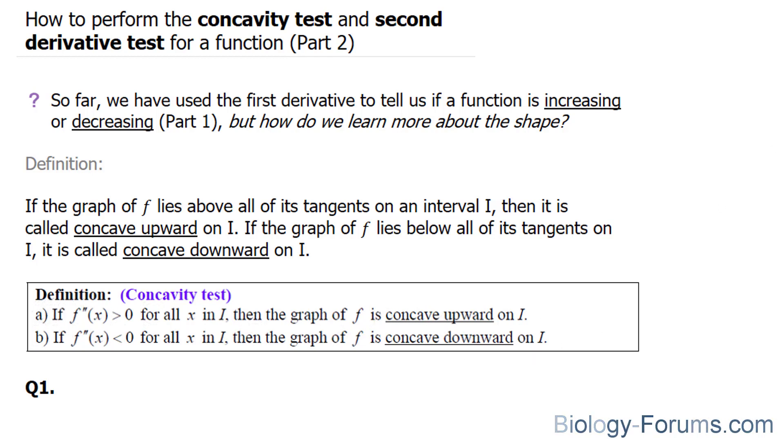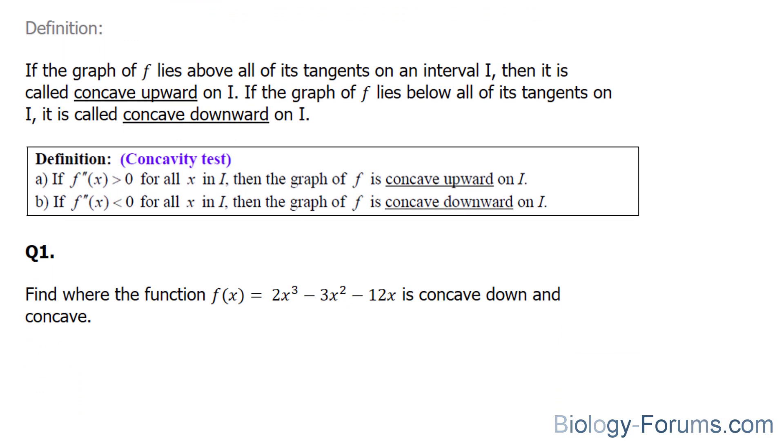So what we're going to do with the function that we started with in part one is we'll find the second derivative, set it equal to zero, and see what happens before and after those critical values are found. Let me demonstrate what I mean.